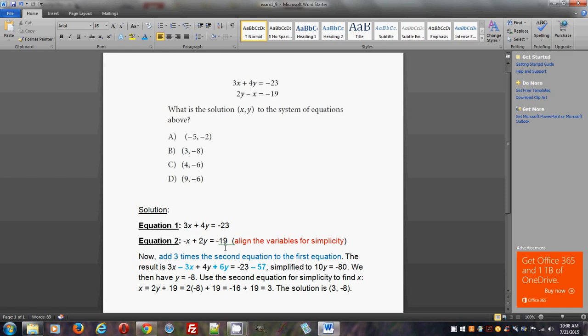The result is 3x minus 3x because you're adding everything. You're adding this equation to three times this equation. So 3x minus 3x plus 4y plus 6y. No negatives here. That's why it's typical addition. Equals negative 23 minus 57. And again, there's only one minus because we're adding, we're not subtracting. And there was already a minus sign here. So net one minus.